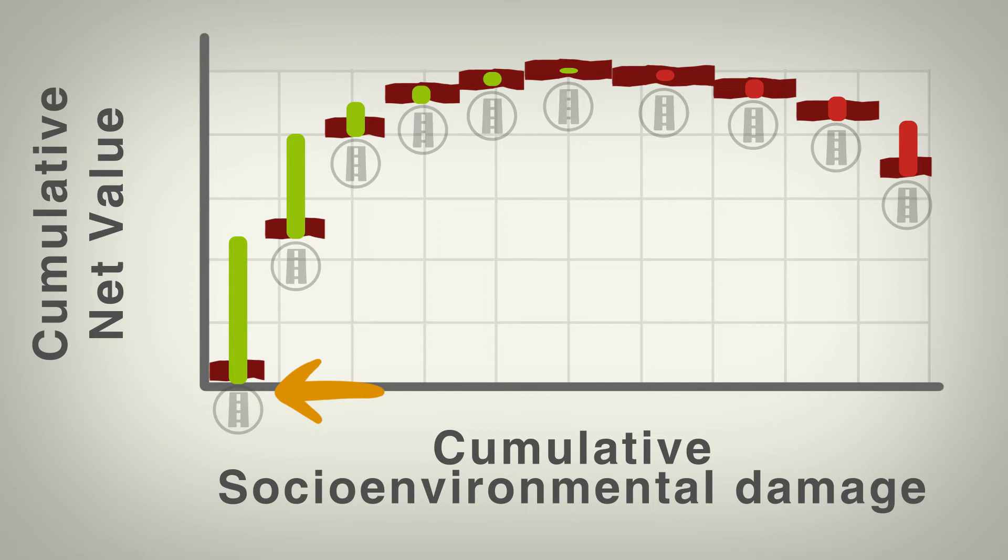From left to right you go from most efficient project to least in terms of economic gain versus socio-environmental damage. Past here, it's essentially a double cost.